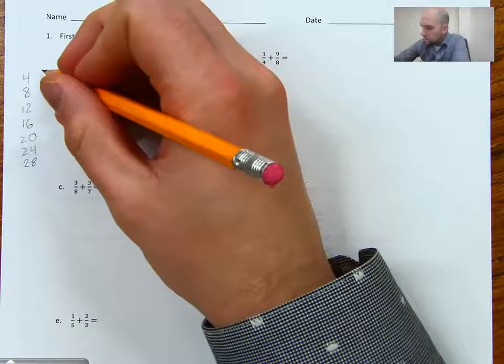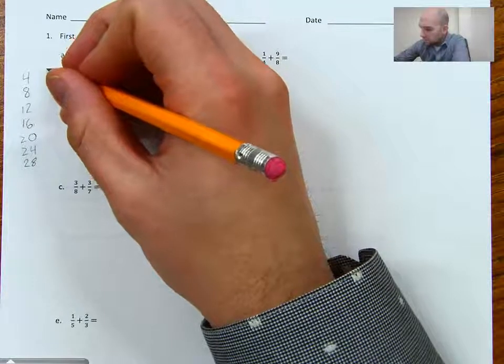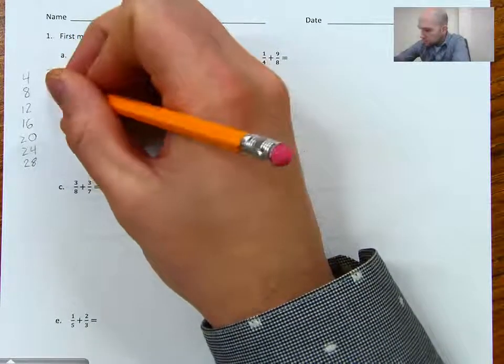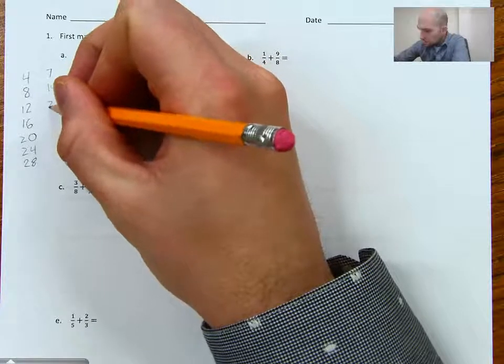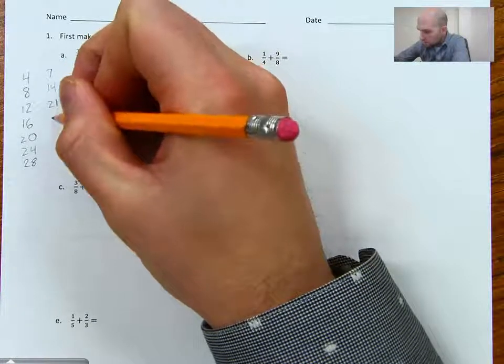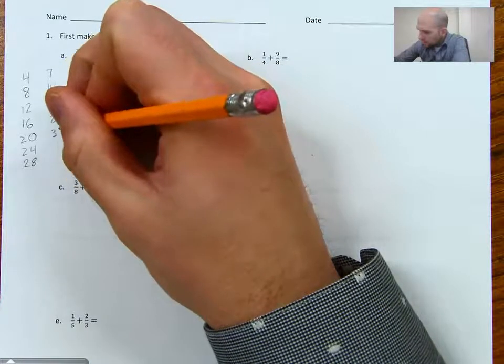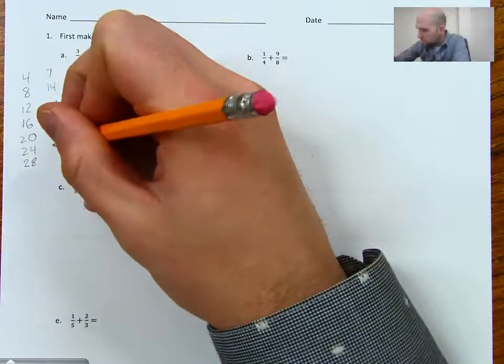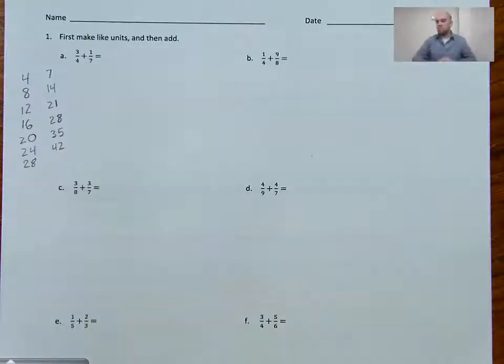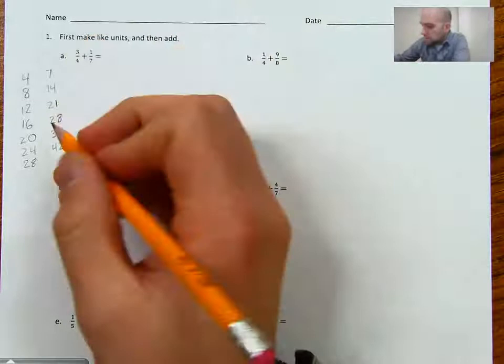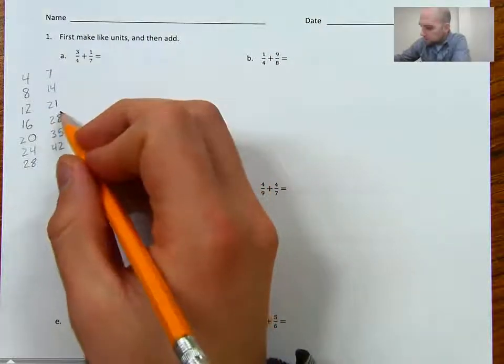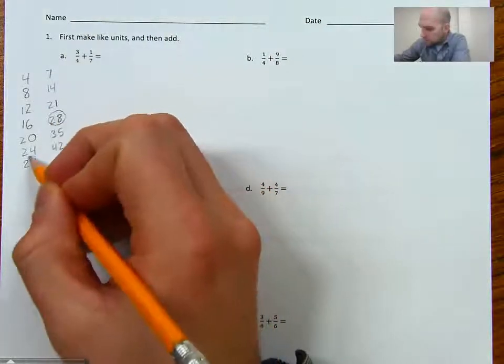And then I'm going to do my, I'm going to skip count by 7s. So I'll do 7, 14, 21, 28, 35, 42. And I want to find the lowest number that both of them have in common. And what I'm seeing here is a 28 and a 28.